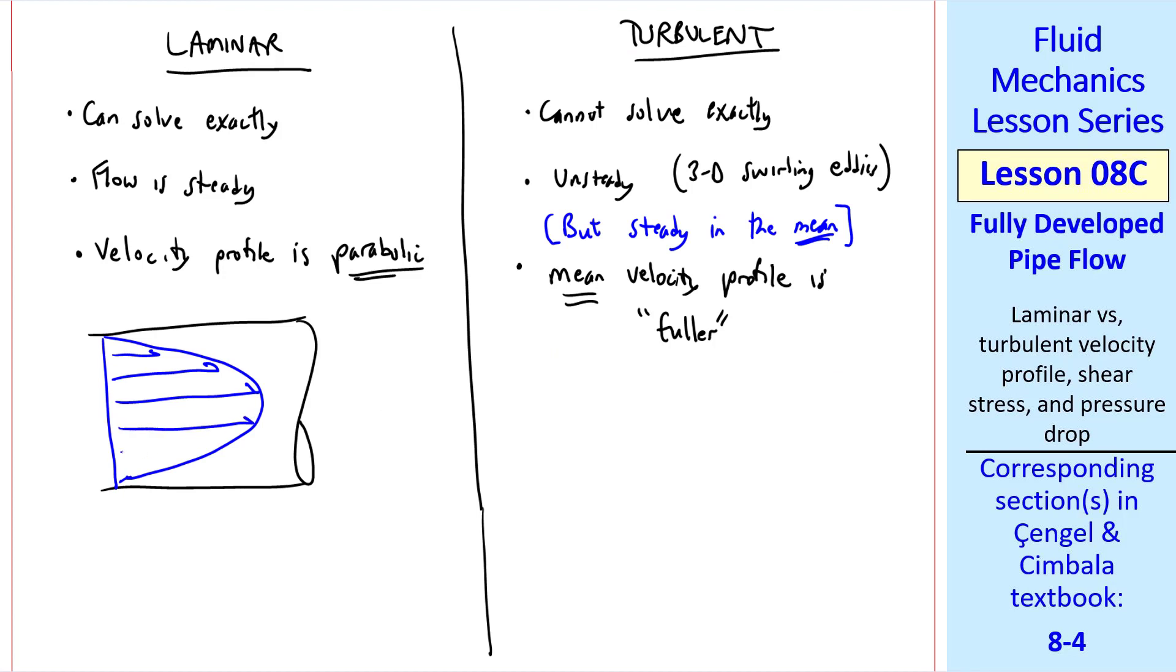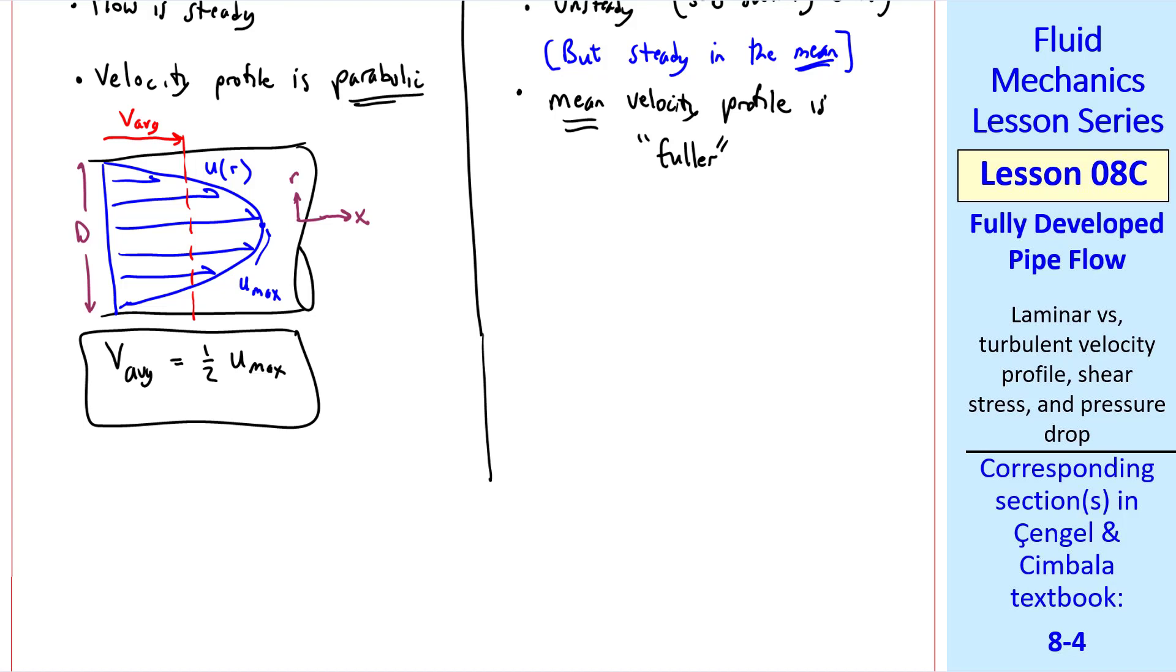The laminar flow velocity profile is parabolic. The mean velocity profile is all that we talk about in the turbulent case, and it's fuller than that of the laminar case. I'll illustrate with some sketches. This is the velocity profile for fully developed laminar pipe flow, where lowercase r is the radius, D is pipe diameter. We have a maximum speed at the center, and u is a function of r. We generally use x as the downstream coordinate. It turns out that v average equals one half u max, which I sketch here. As I mentioned, we do have an analytical solution, which is given by this equation. And we usually just use v instead of v average.